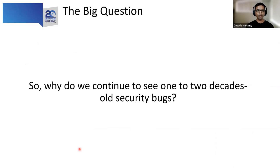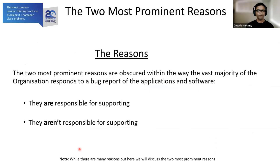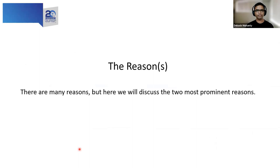So the big question: why do we continue to see one to two decades old security bugs? While there could be many reasons, I've picked the two most prominent ones — the main root causes for all these bugs we've been seeing for a very long time. The two most prominent reasons are obscured within the way the vast majority of organizations respond to bug reports for the applications and software they are — and are not — responsible for supporting.